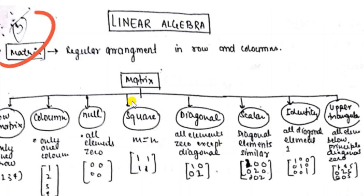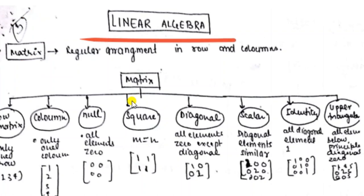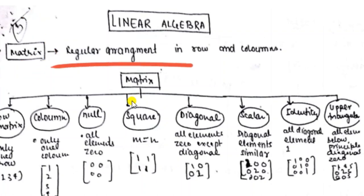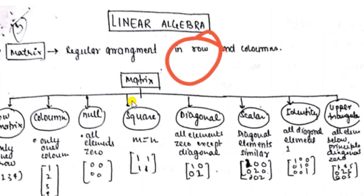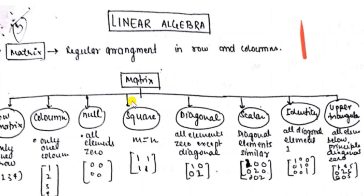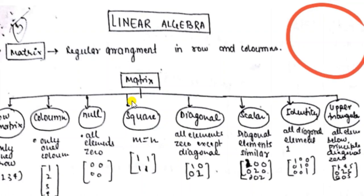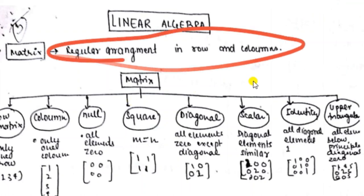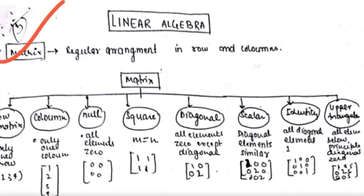Matrix is included in linear algebra. A matrix is a regular arrangement in rows and columns. If there is any arrangement in particular rows and columns, then that particular arrangement is known as a matrix.